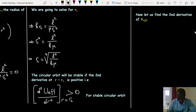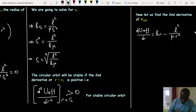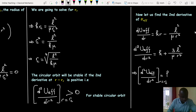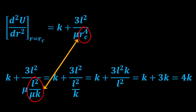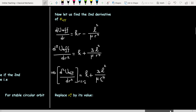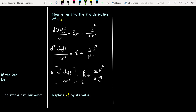Now let's find the second derivative of the effective potential. Inserting the value of R_c into the second derivative of the effective potential, we get a positive value, meaning that the circular orbit is stable. We conclude that the circular orbit is stable because 4k is a positive value — remember that k is a positive constant.